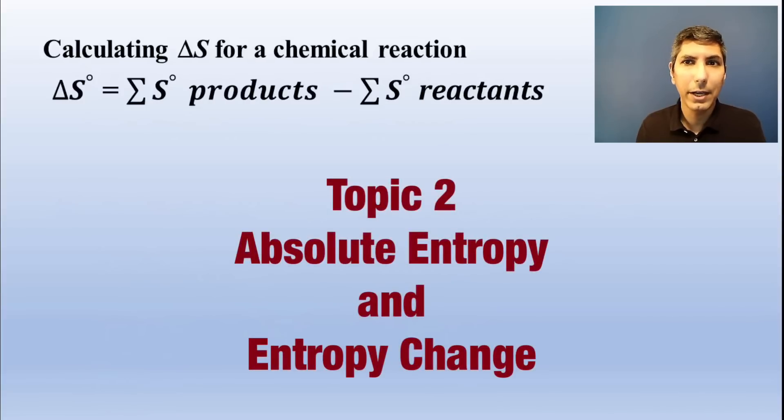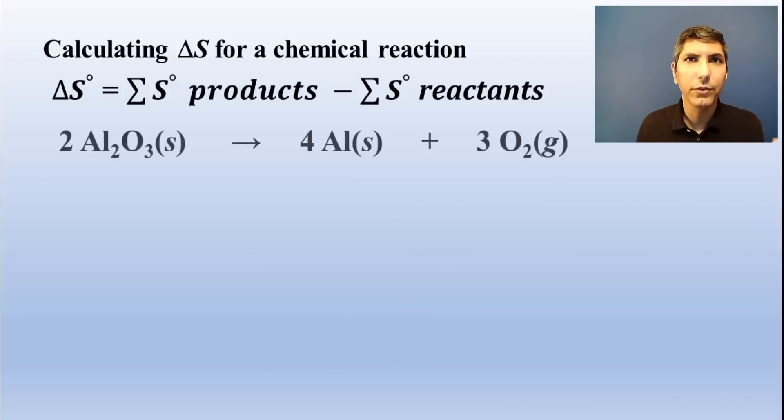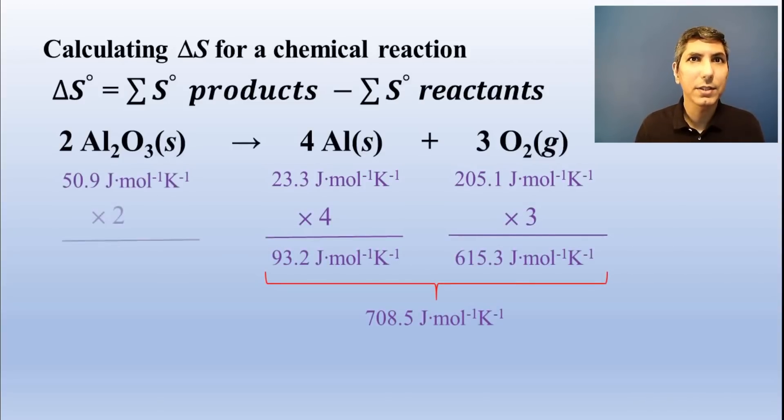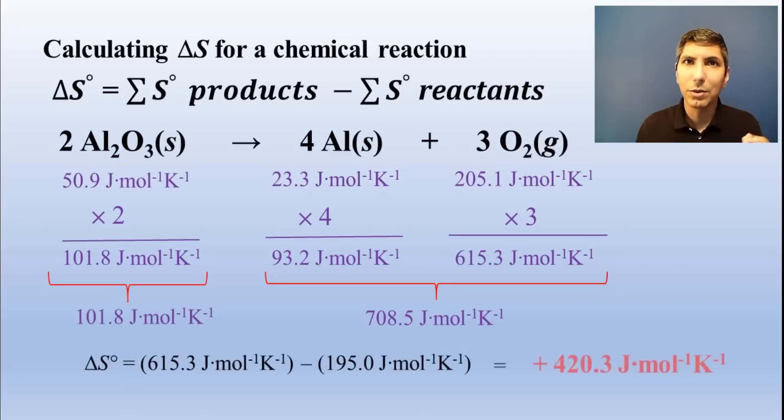We can calculate the entropy of a reaction from the individual entropy values of the substances in the reaction. Take the sum of the entropies of the products and subtract the sum of the entropies of the reactants. This is basically identical to the process for calculating change in enthalpy, though we did back in Unit 6.